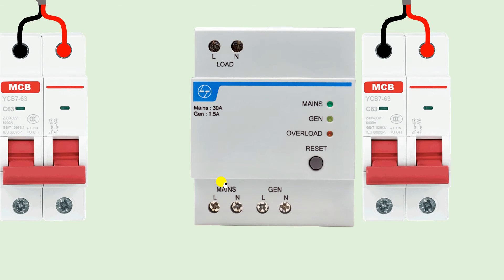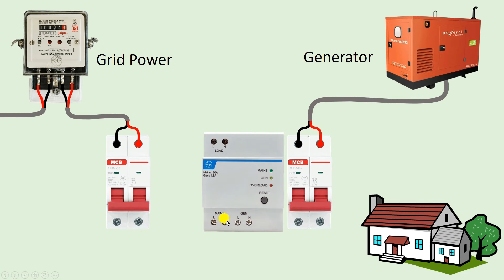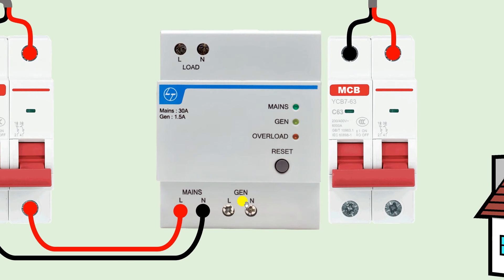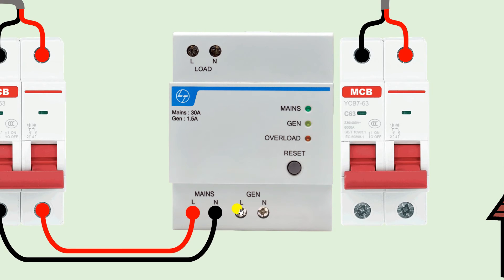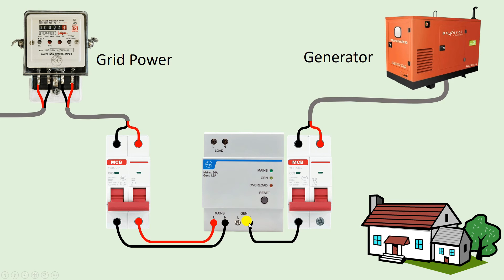In this changeover switch, if you look here, 'MAIN' is written. Below MAIN there is an L terminal and an N terminal. At the N terminal, connect the neutral of the main grid supply — you can see the neutral supply from the grid is connected at this point. Adjacent to this, connect the phase supply. Next to this, 'GEN' is written, meaning generator. Below GEN, L and N terminals are present — phase supply connects at L and neutral supply connects at N. So I connect the neutral supply of the generator to the N terminal and the phase supply to the L terminal.